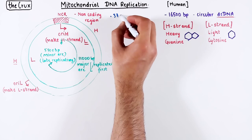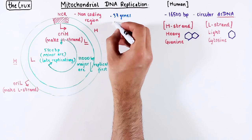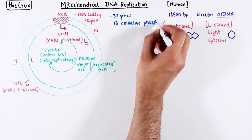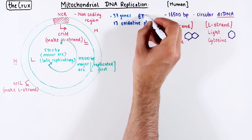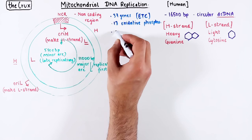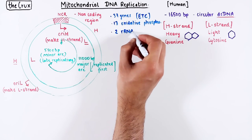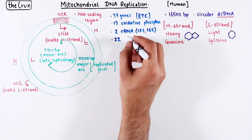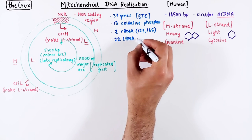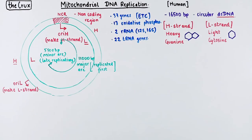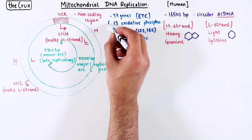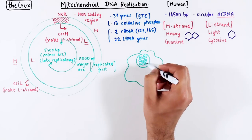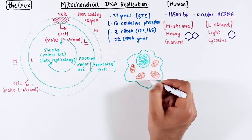One interesting feature about this mitochondrial genome is that it only has 37 genes. 13 of them are meant for oxidative phosphorylation, which you may have learned through the electron transport chain in biochemistry. Two of these 37 are ribosomal genes, and the remaining 22 are transfer RNA genes needed for translation. So more than half of the mitochondrial genes are non-protein coding.